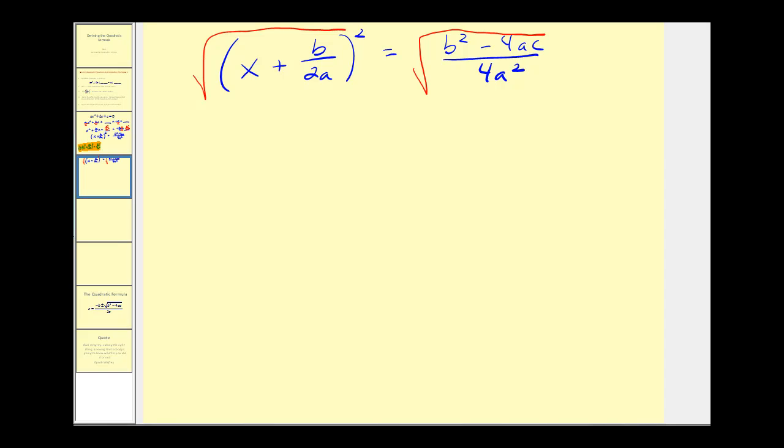On the left side we have X plus B over 2A equals plus or minus... Now our denominator is a perfect square. The square root of 4A squared is 2A, and we're going to leave our numerator as is: the square root of B squared minus 4AC.